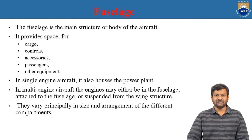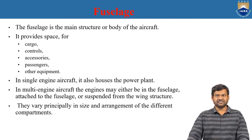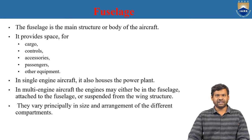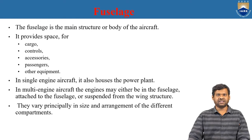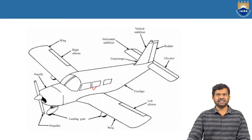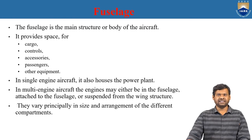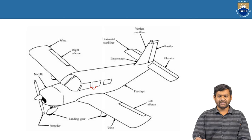Each and every component in an aircraft is important. Let us discuss about the fuselage. The main role of a fuselage is that it is one of the major structures and is the body of an aircraft. It provides space for cargo, controls, accessories, passengers, and other equipment. In a single engine aircraft, it also houses a power plant. In multi-engine aircraft, the power plant is carried either on the nacelles or on the wings.